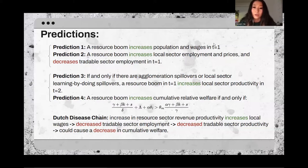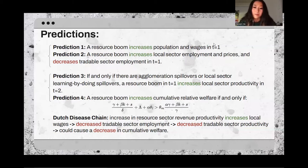Prediction 2 states that a resource boom increases local sector employment and prices and decreases tradable sector employment in time period 1. This highlights that the effect of a resource boom on overall manufacturing employment depends on the share of manufacturers that are traded versus sold locally. If a large proportion is traded, it will be crowded out during a resource boom, as their manufactured goods become more expensive on a global market, losing competitive advantage. On the contrary, if the majority of manufacturing is sold locally, it will be crowded in.